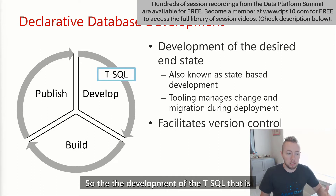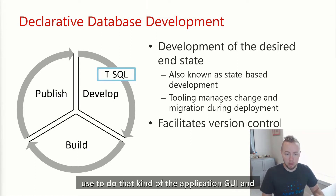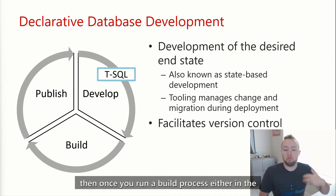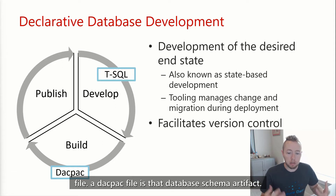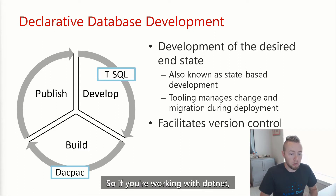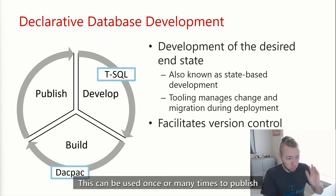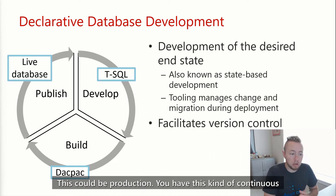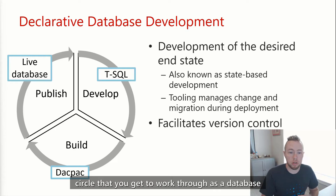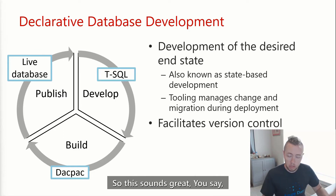Along the general application development cycle, you develop code, build it if it's a compiled language, and then publish your artifacts. With SQL projects, you have the same pathway as application developers. Development is the T-SQL in the SQL projects; running a build process in the application or CI/CD pipeline produces a DACPAC file — the database schema artifact. Like DLLs in .NET, in a SQL project you get a DACPAC, which is the compiled database schema that can be published to test environments or production.